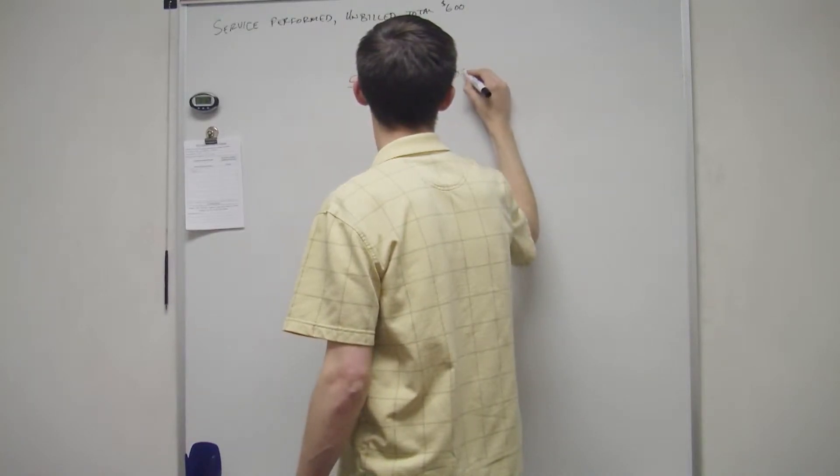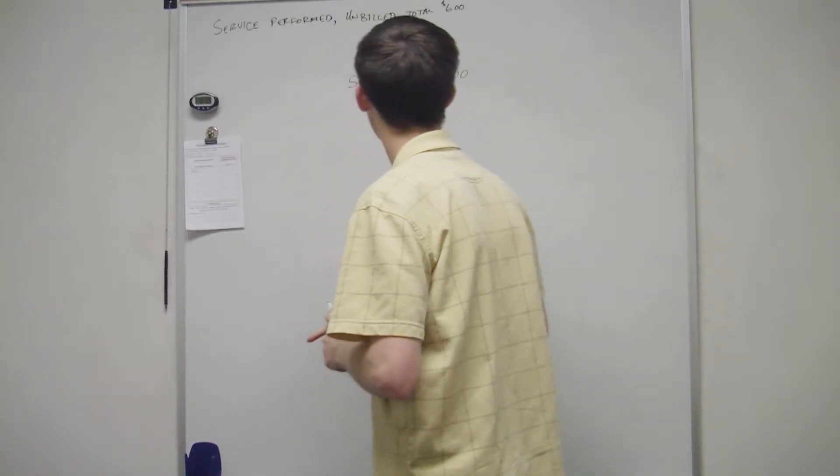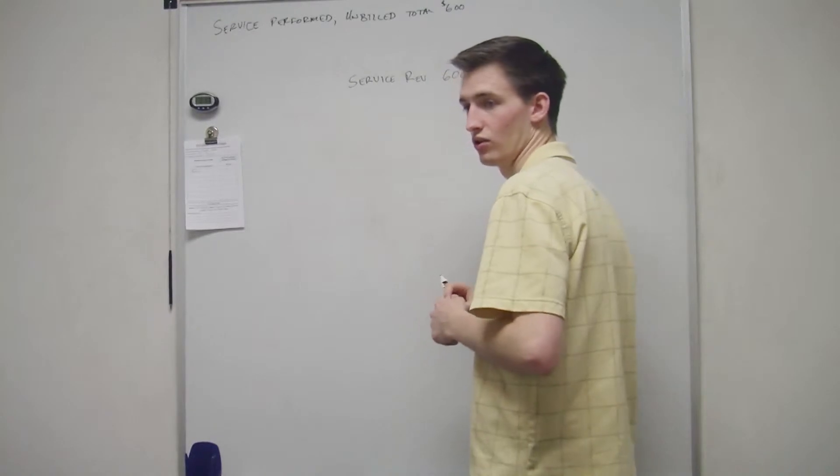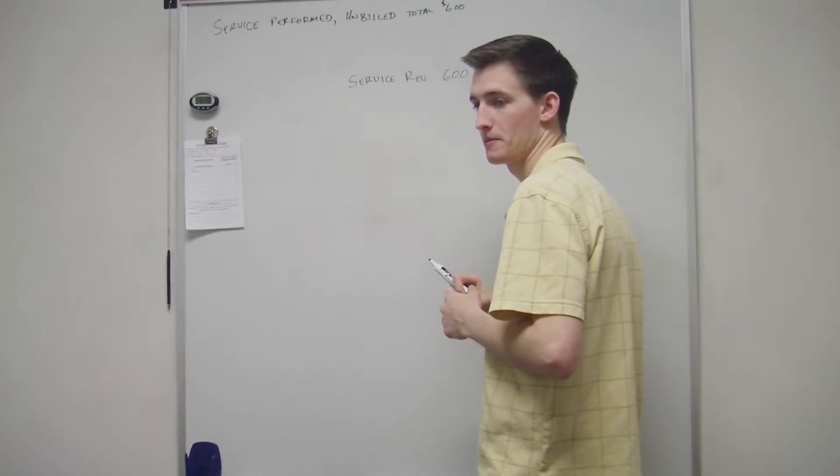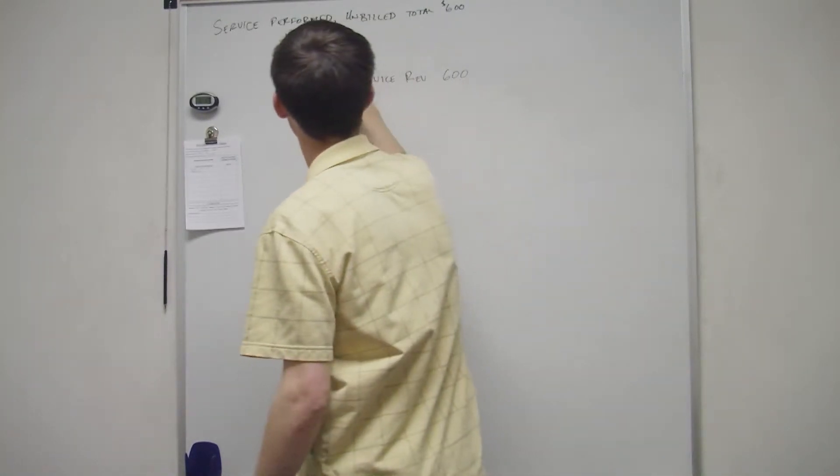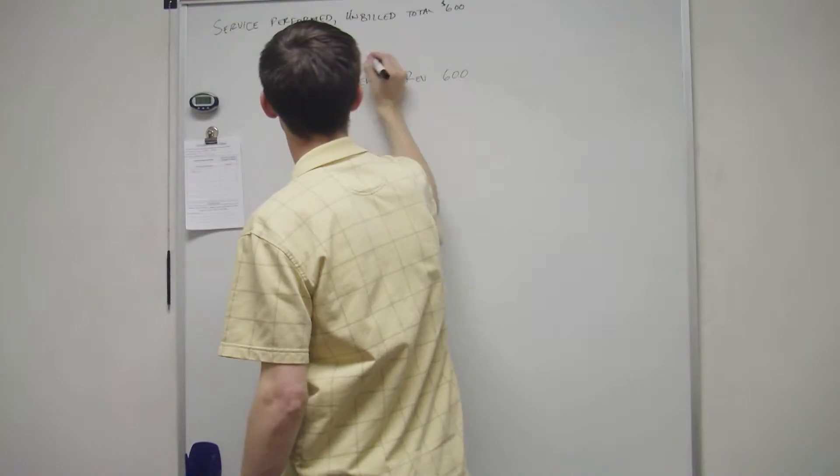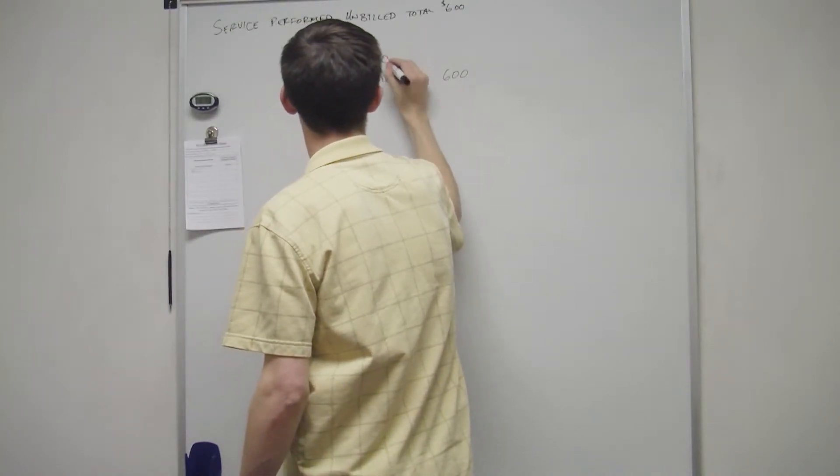And then what? What else? Debit. Unearned, or accounts receivable. Accounts receivable, right? Because we've accomplished what we were doing, they still owe us the $600.